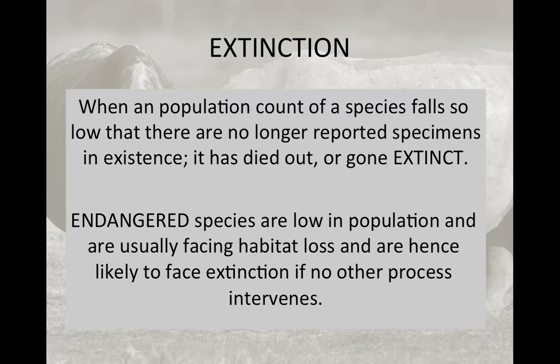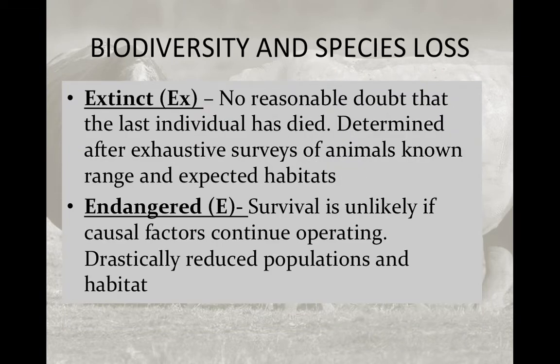If a population count of a species falls so low that there are no reported specimens in existence — and there's a certain time frame, usually five years — if no specimens have been found, it's considered to have died out or gone extinct. Species that are in danger of extinction are considered endangered; these species are very low in population, are facing habitat loss, and are likely to face extinction themselves if there is no intervention.